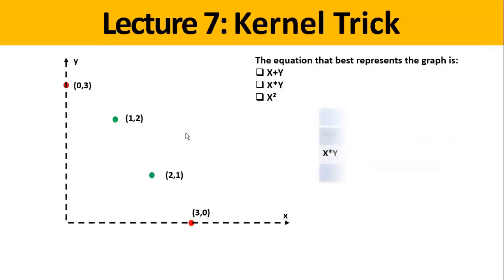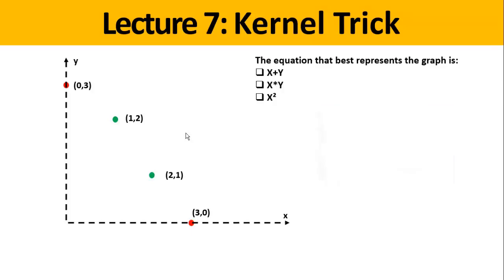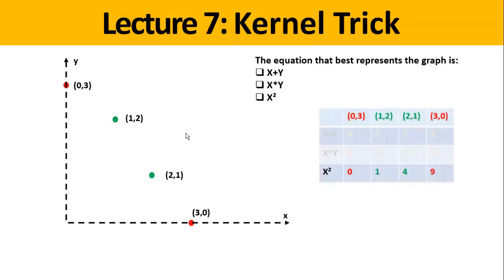With the second equation, the product x times y: for the first point we have 0, for the second one 1×2=2, for the third one 2×1=2, and for the last one 3×0=0. For the last equation, x squared — the first coordinate squared: 0²=0, 1²=1, 2²=4, 3²=9.